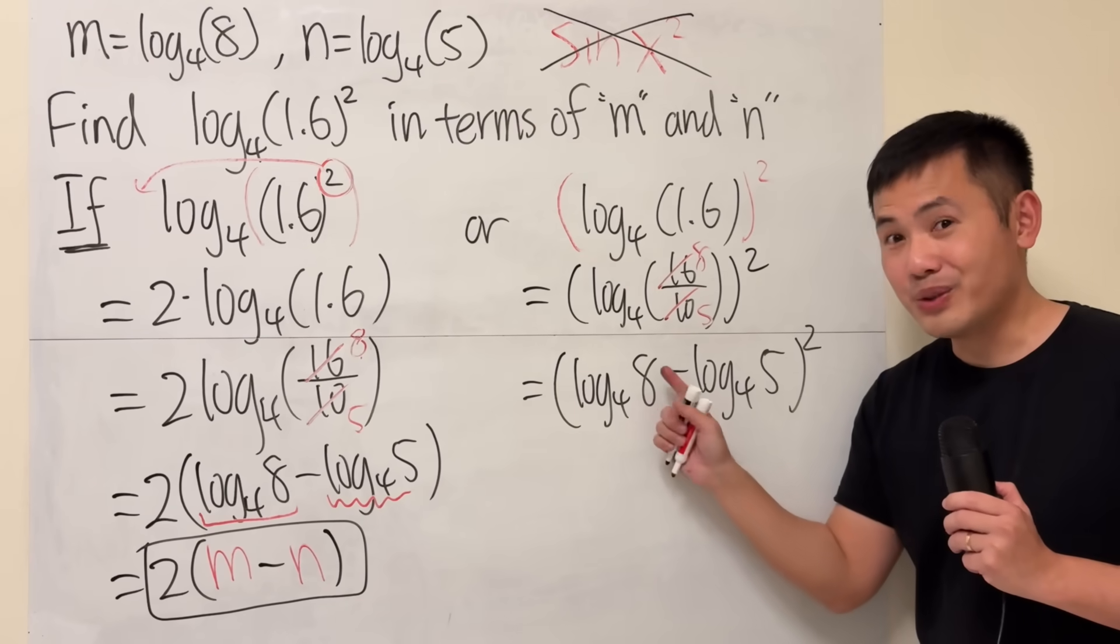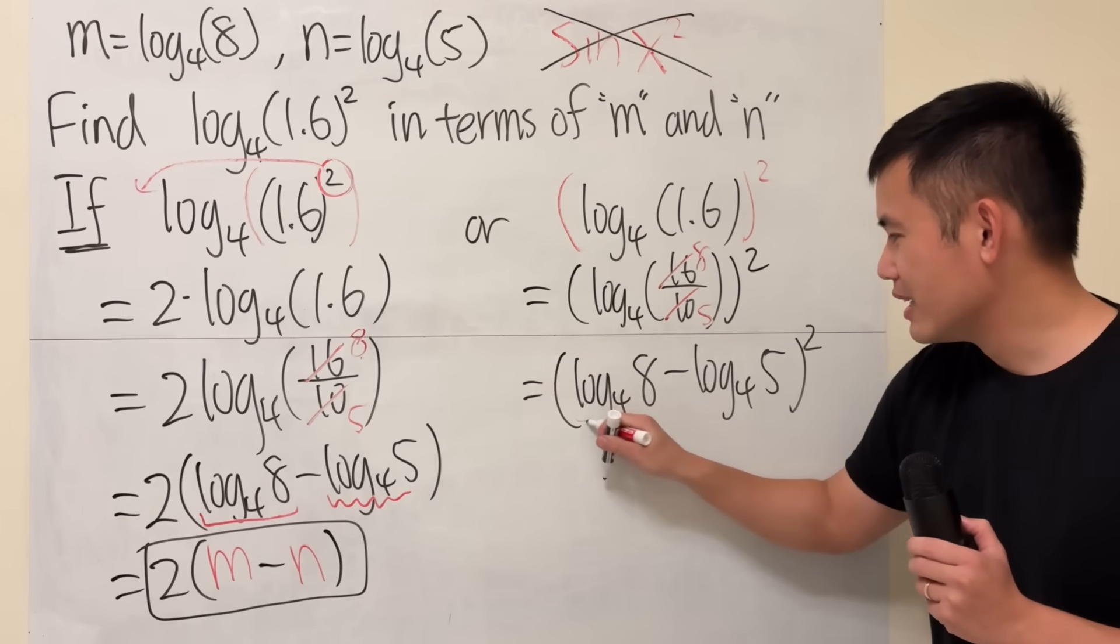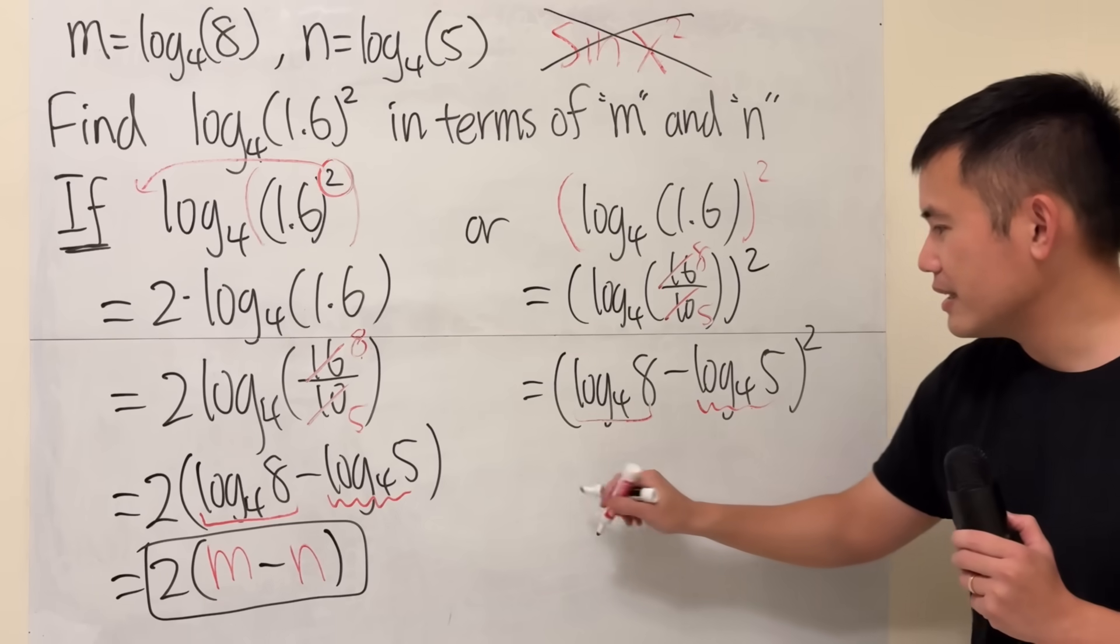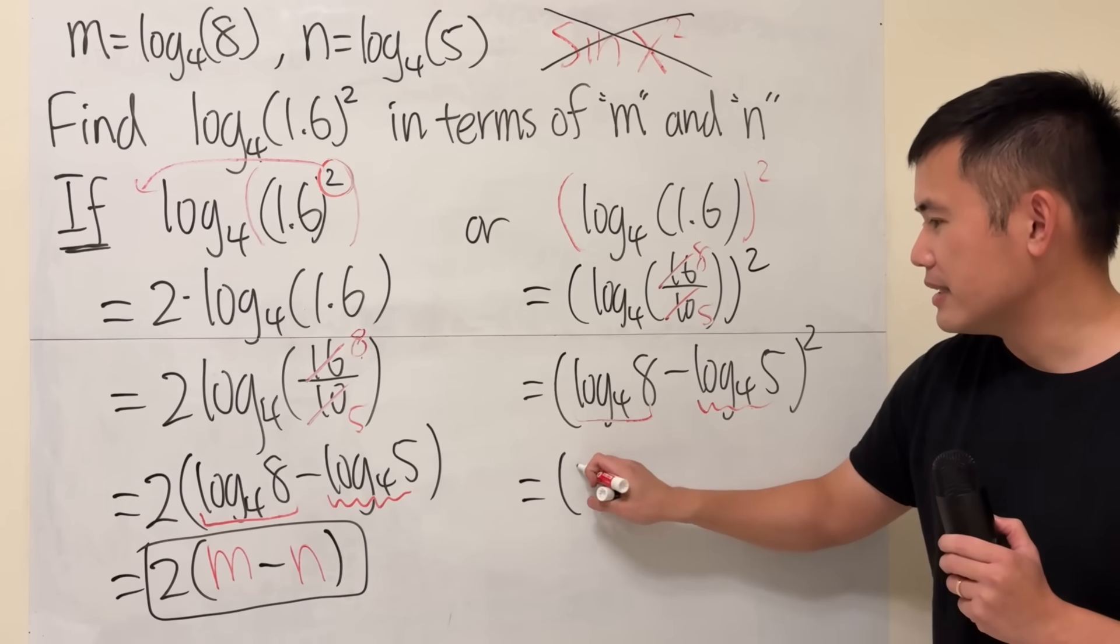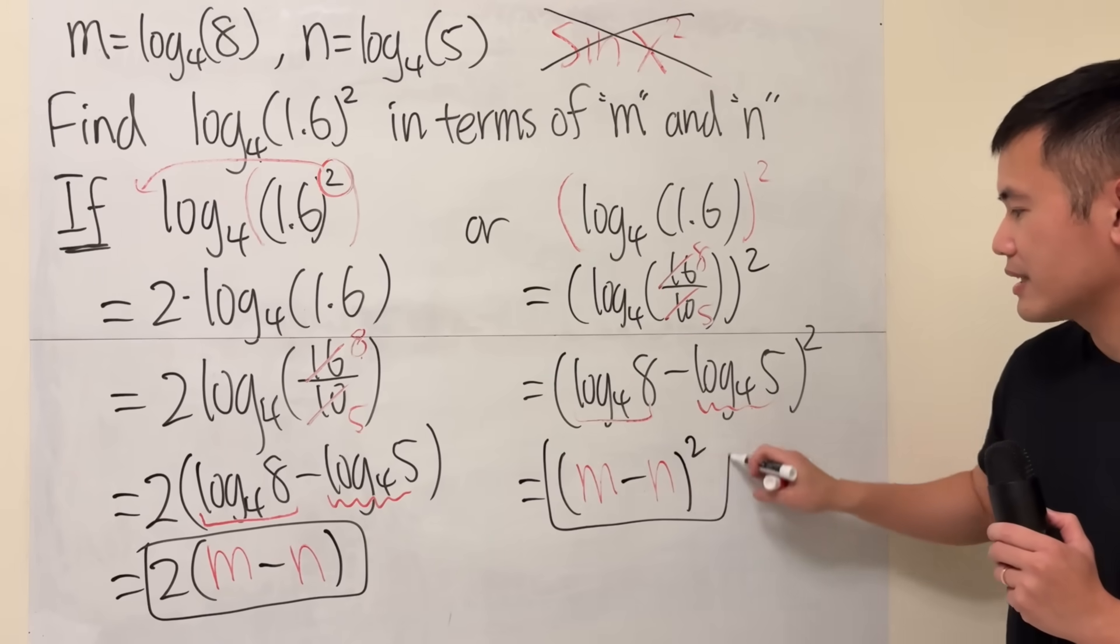If you only have one thing instead of a log, you don't need to put on the parentheses. That's a usual convention. Anyways, again, this is m and this is n, so you just keep it as m minus n and then square, and then just like that.